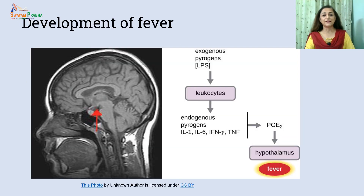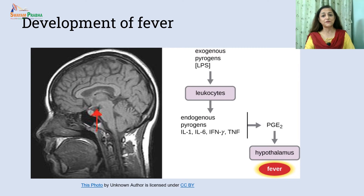Now let us study the mechanism of development of fever. When any external agent like bacteria, virus, or fungi infects our body, it causes activation of phagocytes in the bone marrow, which in turn causes release of a pyrogen — that is known as fever-inducing hormone. This endogenous pyrogen causes synthesis of prostaglandins, which are hormone-like substances. These hormone-like substances go to our hypothalamus — the thermostat of our body — to reset the body temperature higher than normal. And we call it fever, which is what we see through a thermometer.